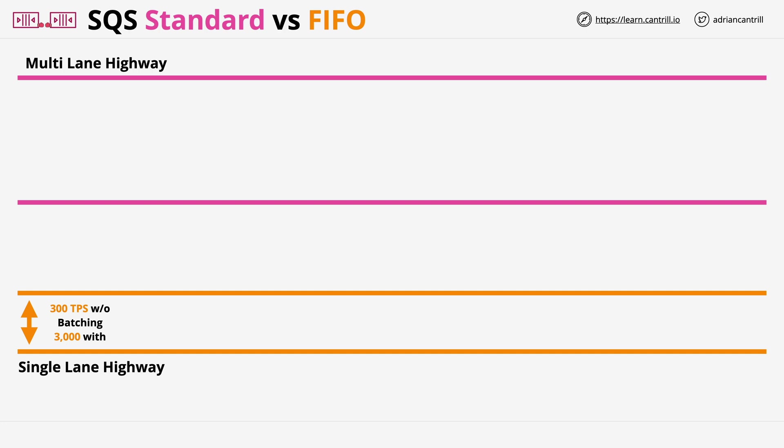It's worth mentioning that there is a high throughput mode for FIFO, but at the time of creating this lesson it's only available in preview. Standard queues — the multi-lane highways in this analogy — don't suffer from any real performance issues, and can scale to a near infinite number of transactions per second.